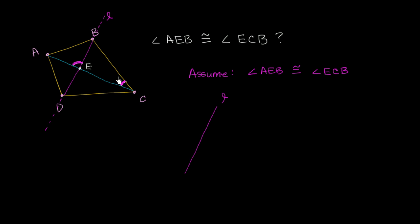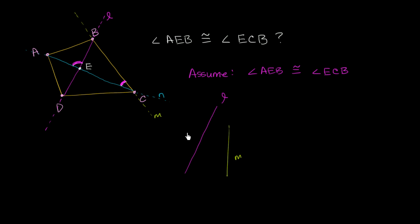And C, B, which is a segment, is also a subset of a line. We could call it a line if we were to keep extending it — let's call that line M. C, B is a subset of line M. And then we also have segment AC, which is a segment but we can view it as a subset of a larger line. We'll call that larger line line N, and we see that it intersects both line L and line M.